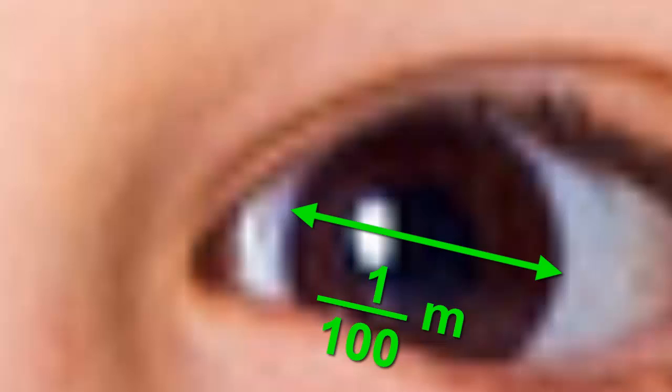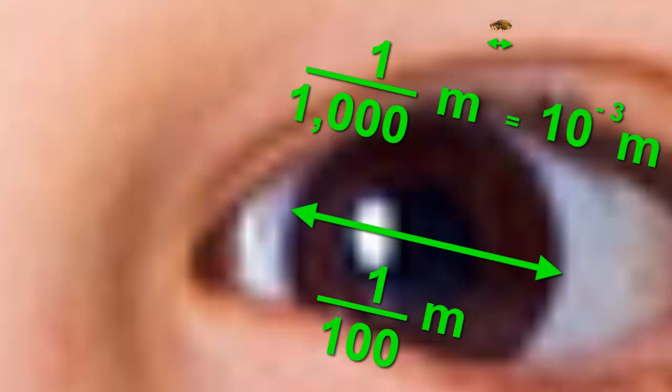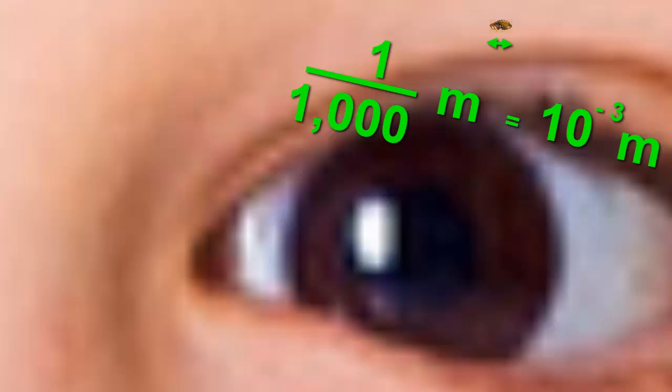Now what's a tenth of the width of his iris? Hey, did you see the flea that jumped onto Lee's face? Lee's got a flea. Coincidentally, a flea is a tenth of the width of his iris. That makes it about a thousandth of a metre, or ten to the negative three of a metre. A thousandth of a metre is also called a millimetre.